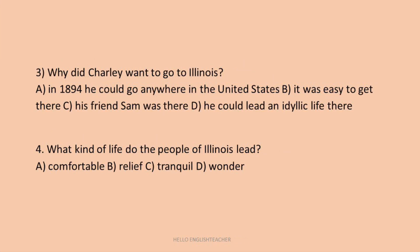Question 3: Why did Charlie want to go to Galesburg, Illinois? Options: in 1894 he could go anywhere in the United States; it was easy to get there; his friend Sam was there; he could lead an idyllic life there. The answer is D — he could live an idyllic life there. Question 4: What kind of life would people of Illinois lead? Options: comfortable, relief, tranquil, wonder. The answer is C, tranquil, which means peaceful life.